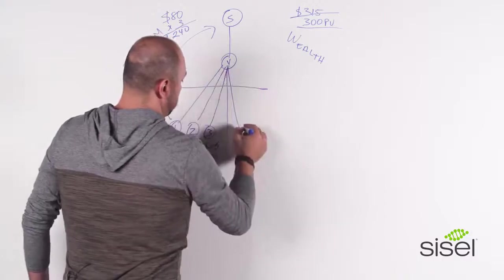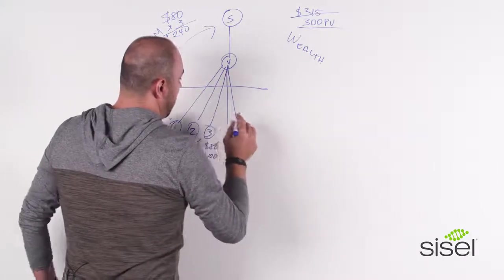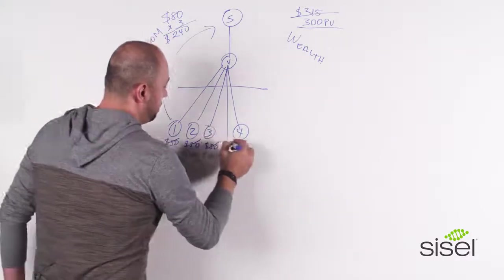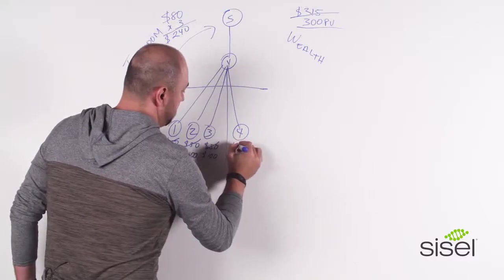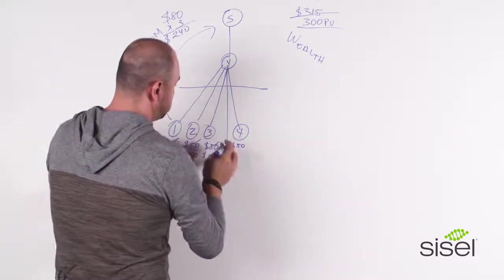You're going to sign up number four. After you sign up number four, the company will give you the $50, remember, that you got during these first three people.